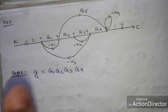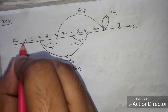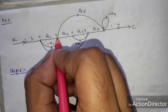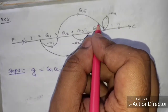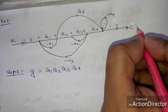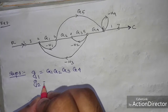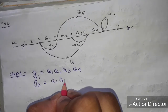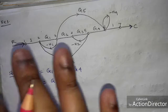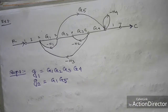There is another forward path: starting from R, going through 1, then G1, and taking the route through G5, we can reach the output. So this second forward path is G1 × G5. There are only two forward paths in total.